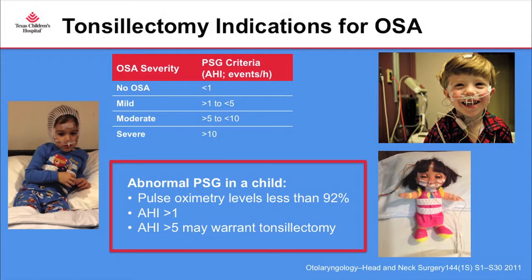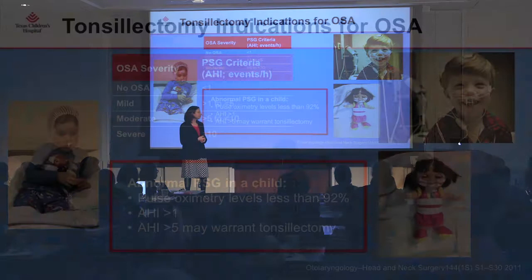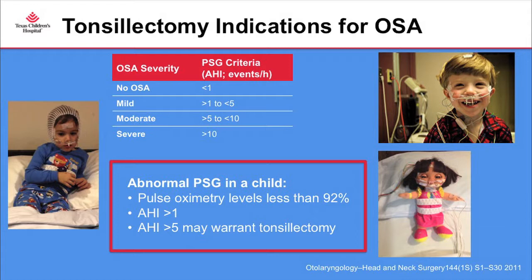There are different ways to grade sleep severity. In clinical practice and research, we use the AHI grading system: less than 1 is no OSA, 1 to 5 is mild, 5 to 10 is moderate, and greater than 10 is severe sleep apnea. A sleep study is considered abnormal if pulse oximetry falls below 92% for an extended period, or if the AHI is greater than 1; an AHI greater than 5 may warrant a tonsillectomy.